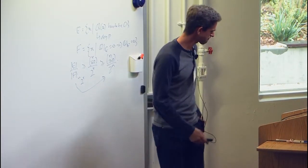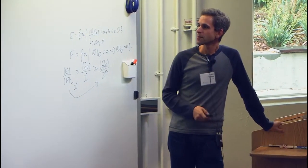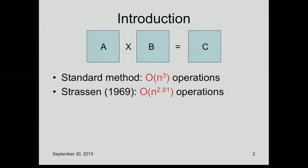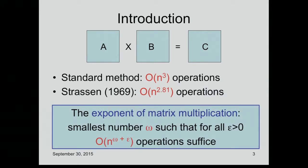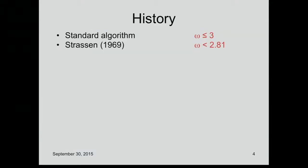So this is the problem we're interested in: multiplying n by n matrices. These are n by n matrices with complex entries, and as we all know it takes n³ operations to do this in the standard way. Strassen discovered you can do faster than that in 1969 and set off this race to determine the exponent of matrix multiplication Ω—the smallest real number such that you can do n by n matrix multiplication in about n^Ω operations.